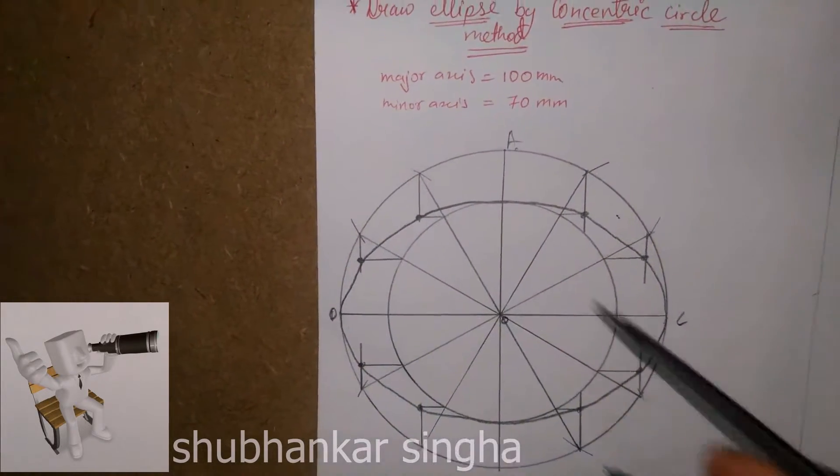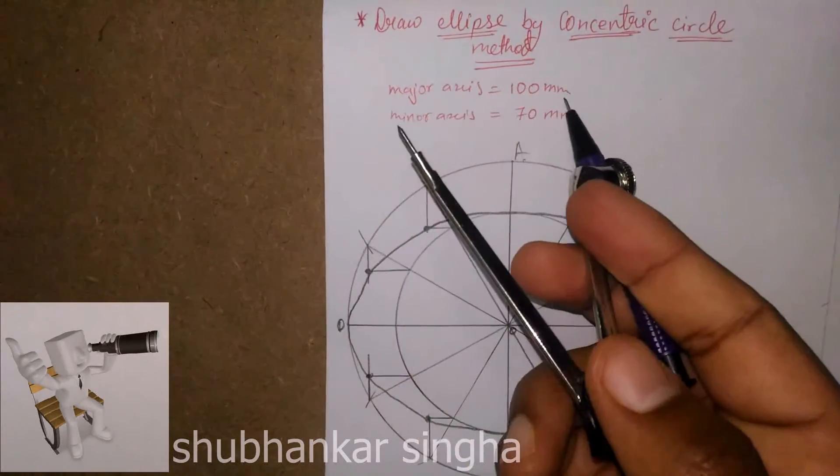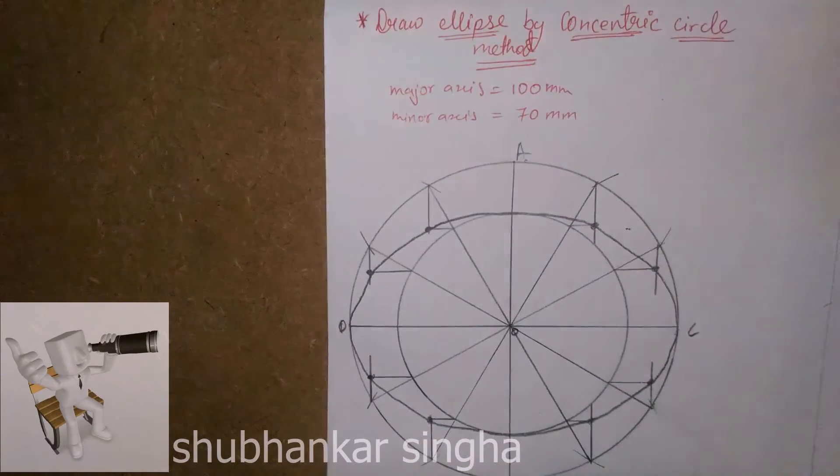Here we have the ellipse of major axis 100mm and minor axis 70mm.